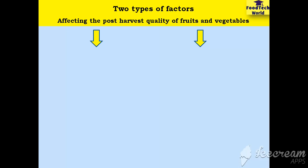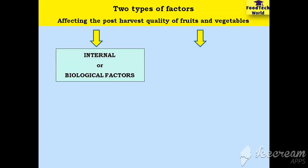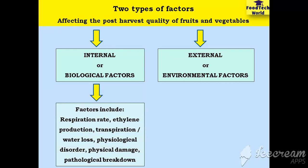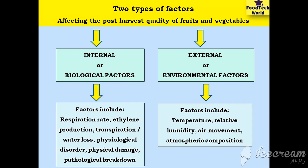There are two types of factors that affect the post-harvest quality of fruits and vegetables: internal factors and external factors. Internal factors are also known as biological factors, whereas external factors are also known as environmental factors. Internal factors take place inside the fruits and vegetables, whereas external factors take place outside. Internal factors include respiration rate, ethylene production, transpiration, physiological disorder, physical damage, and pathological breakdown, whereas external factors include temperature, relative humidity, air movement, and atmospheric composition.